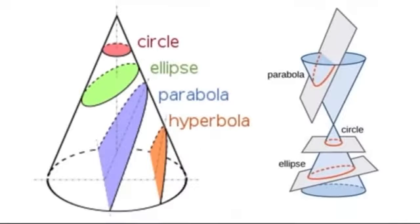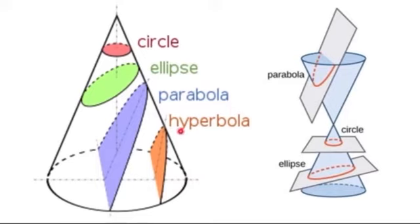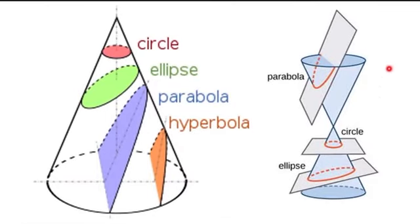These shapes are the cross sections of cones. If you see a picture of a cone, the circle is the horizontal cross section. If you cut the cone at an angle you will get an ellipse; if you cut in another direction you get a parabola; and if you cut at a steeper angle you get a hyperbola. So cutting at various angles gives the different conic sections.